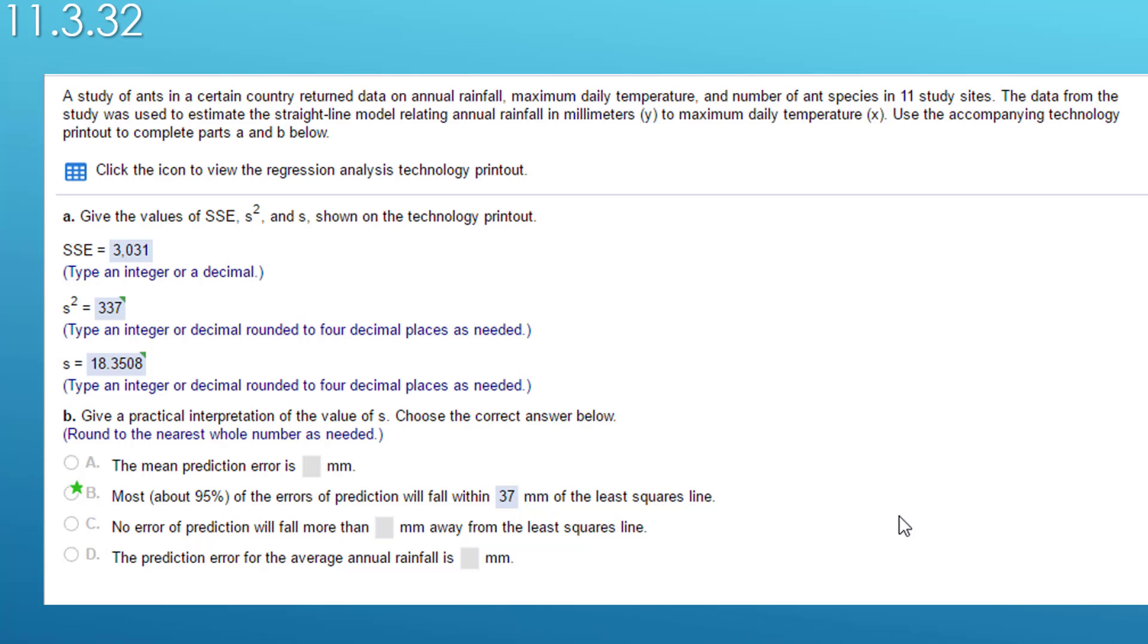Hey folks, this is Dr. Don. I have a problem out of Chapter 11 in the McClave text, problem 11.3.32. It has to do with understanding, finding, and using some of the error terms that you get in regression.